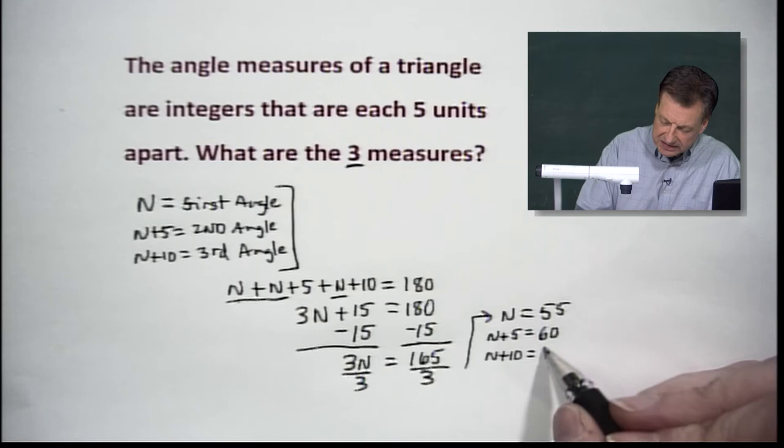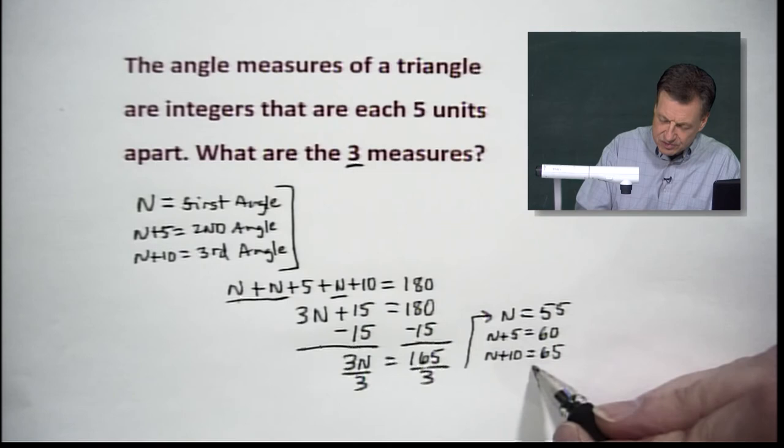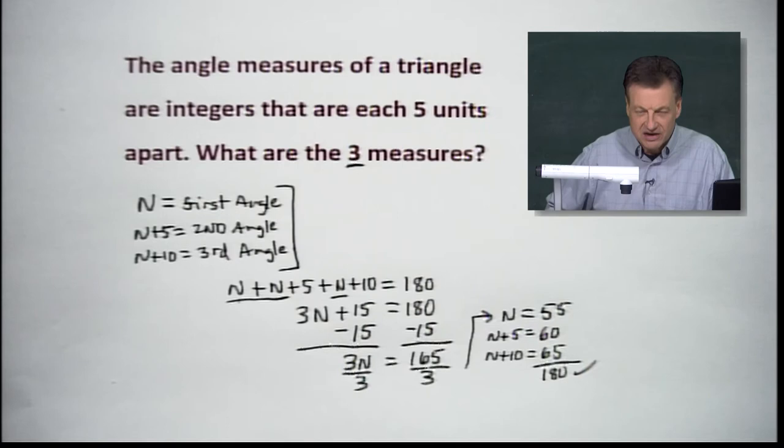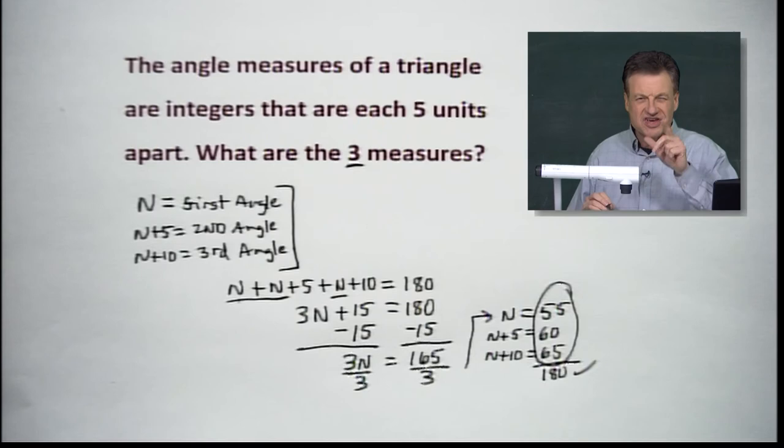Now notice they're all five units apart. That's what they're supposed to be. And do they add up to 180? That's the next test. I believe they do. They check out. So our answers are good. That's what we're looking for. What are the three measures? 55 degrees, 60 degrees, and 65 degrees. Pretty quick work on your problem today.